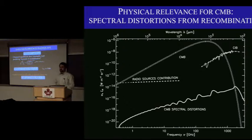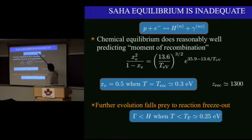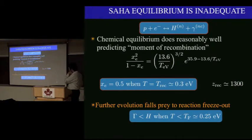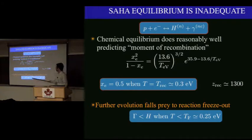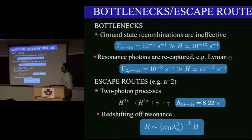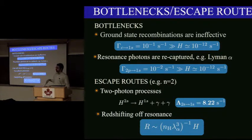The simplest physical picture for recombination assumes we can just write down the Saha equation, where n denotes excited states of hydrogen. That tells us the free electron fraction falls to about half when the temperature is around 0.3 eV, or around redshift 1300. But all subsequent evolution can't be described by Saha equilibrium because all the relevant rates are less than the Hubble parameter starting just below this temperature. So you actually have to go solve the coupled rate problem. A key bottleneck is that if you recombine to the ground state, the photon produced will ionize its neighbor very quickly relative to the expansion timescale — so ground state recombinations are totally ineffective.